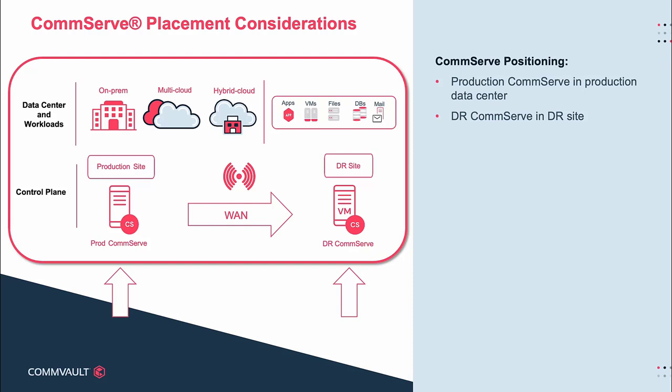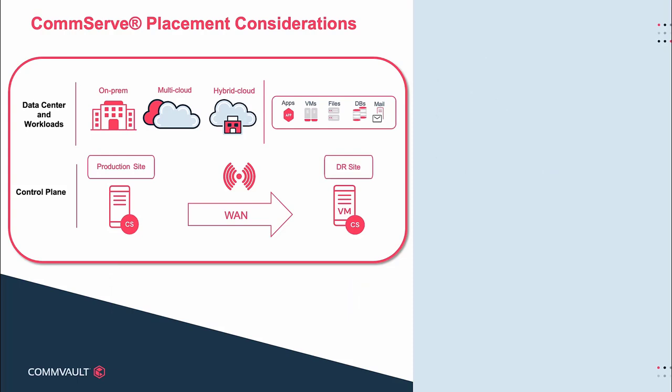As seen here, the production CommServe is placed in the primary production data center and the DR CommServe is placed in the DR site. The biggest benefit of this method is that it allows backup and recovery operations to continue normally in the event of a WAN disruption. This is a common approach to deploy CommServe in a customer's environment, but we will also cover a few of the other possibilities next.